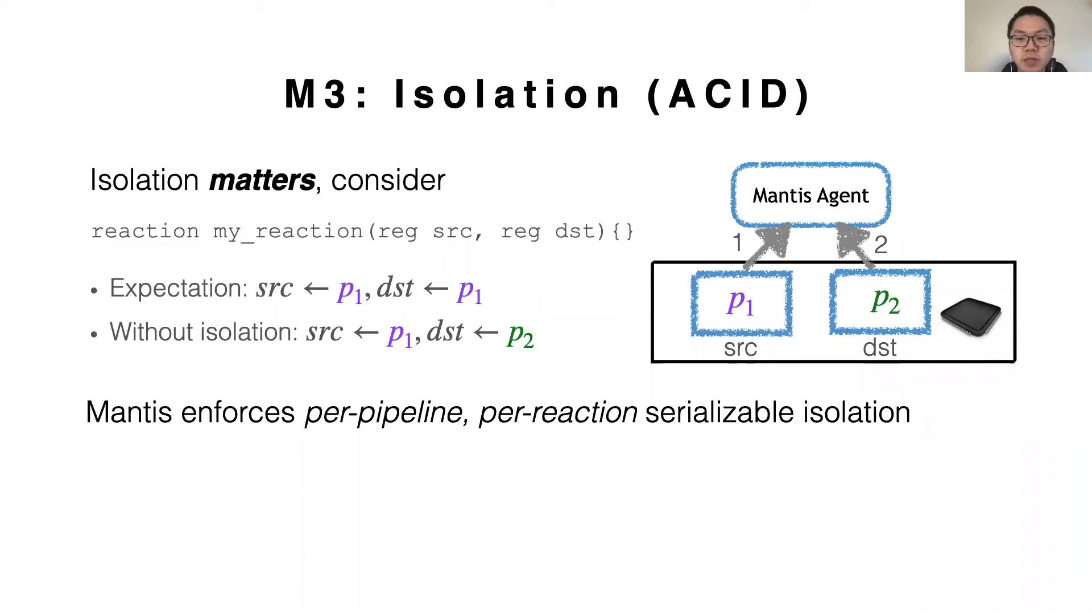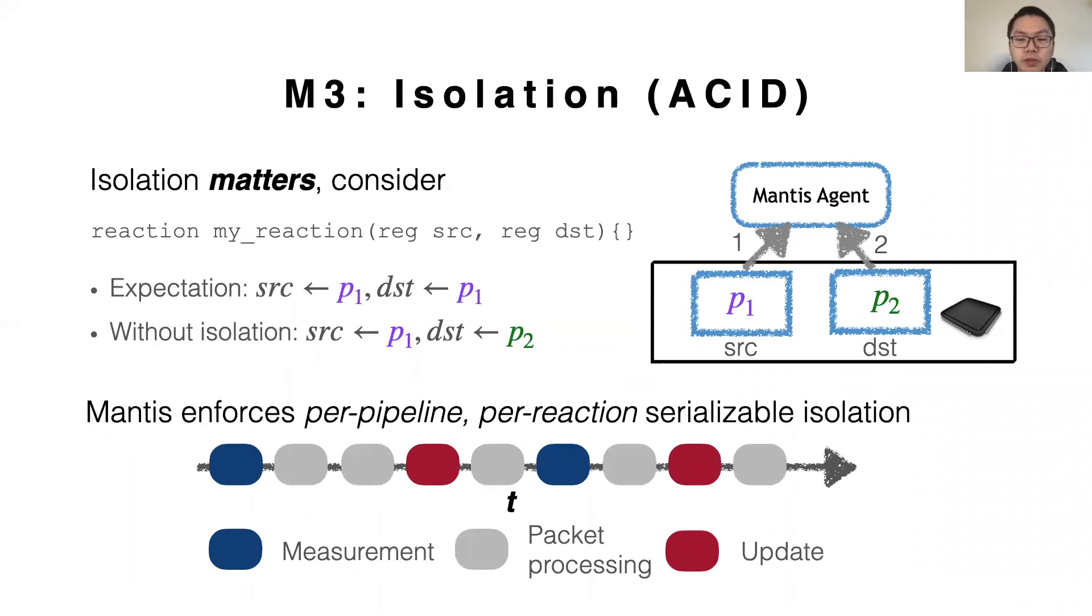Such non-isolated measurement could break the semantics of the reaction logic. Similar problems arise when updating multiple entities in the same reaction. To address the issue, Mantis provides per-pipeline, per-reaction serializable isolation between measurements, updates, and packet processing. Note that the isolation I'm talking about here is the isolation of ACID, which is to say that all three types of transactions appear to be executed in some sequential order, though in fact they are concurrent. This makes it easier to reason about the reactive behaviors.